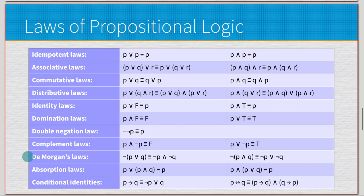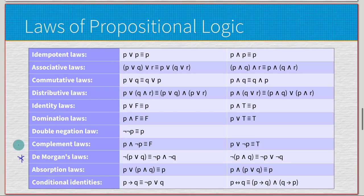There are a few standout ones. DeMorgan's is definitely a standout — you're going to see it a lot in mathematics and computer science and computer engineering, either directly or as a critical foundation. We'll touch more on that towards Chapter 5, but just know that DeMorgan's law is very important.